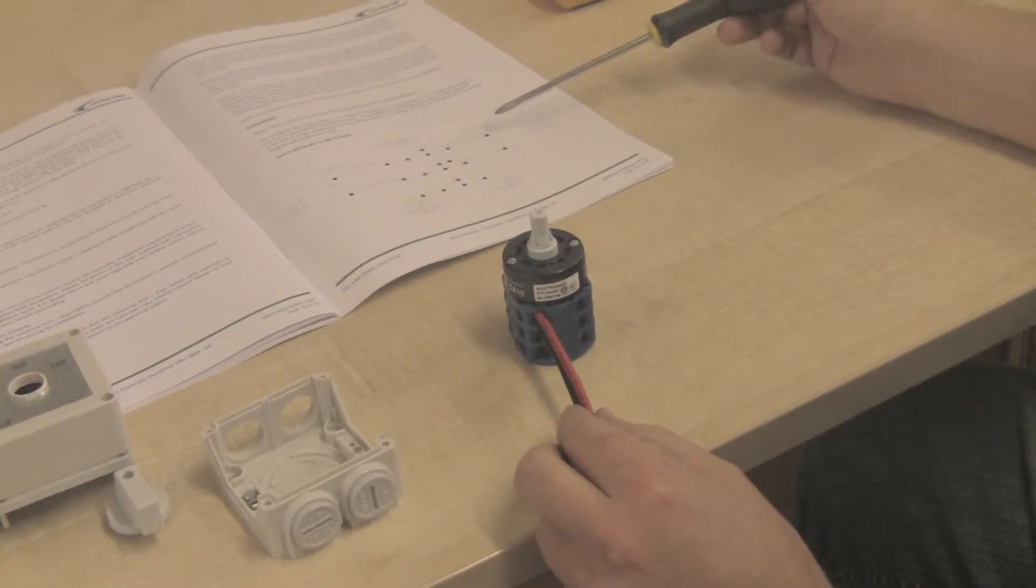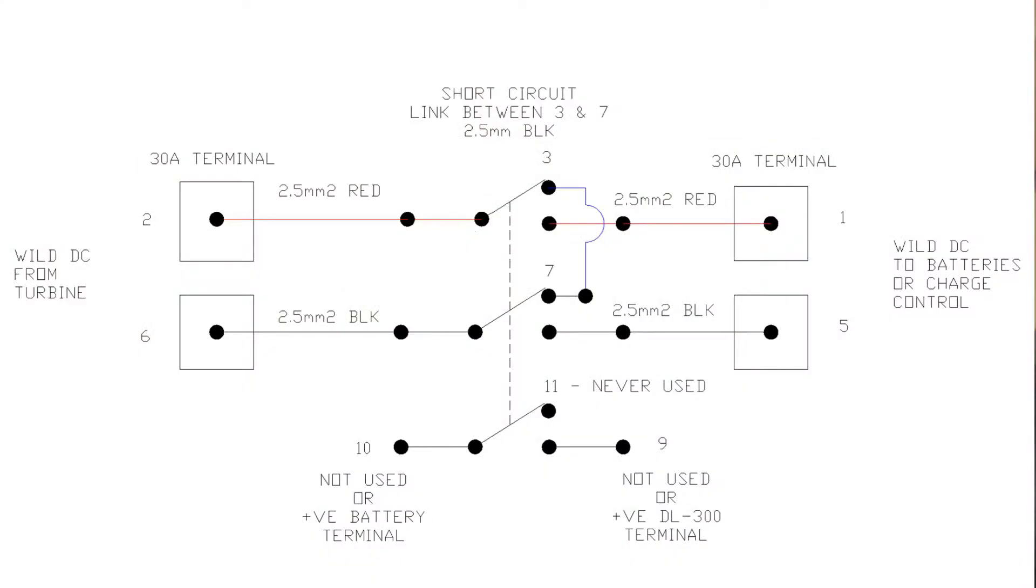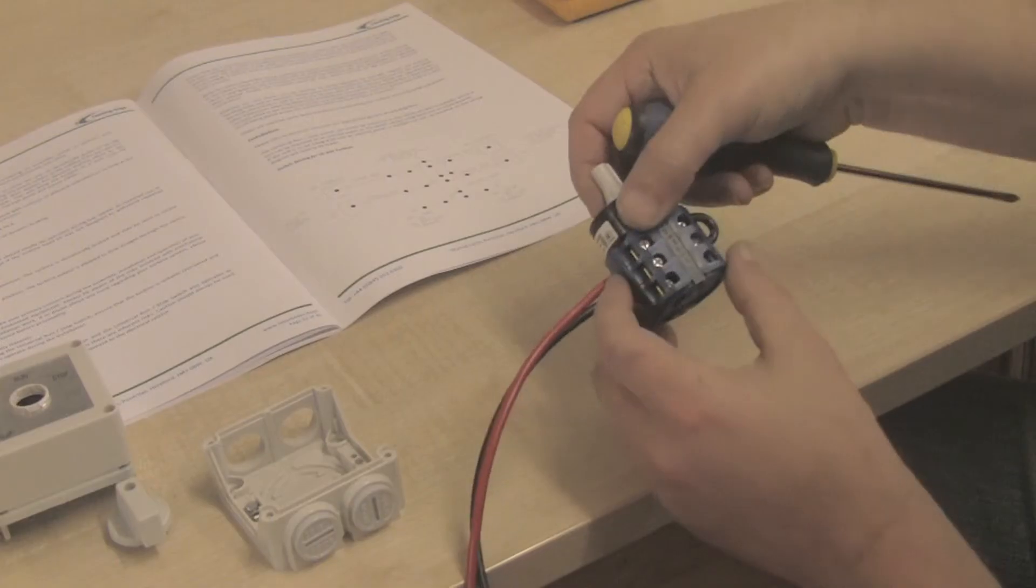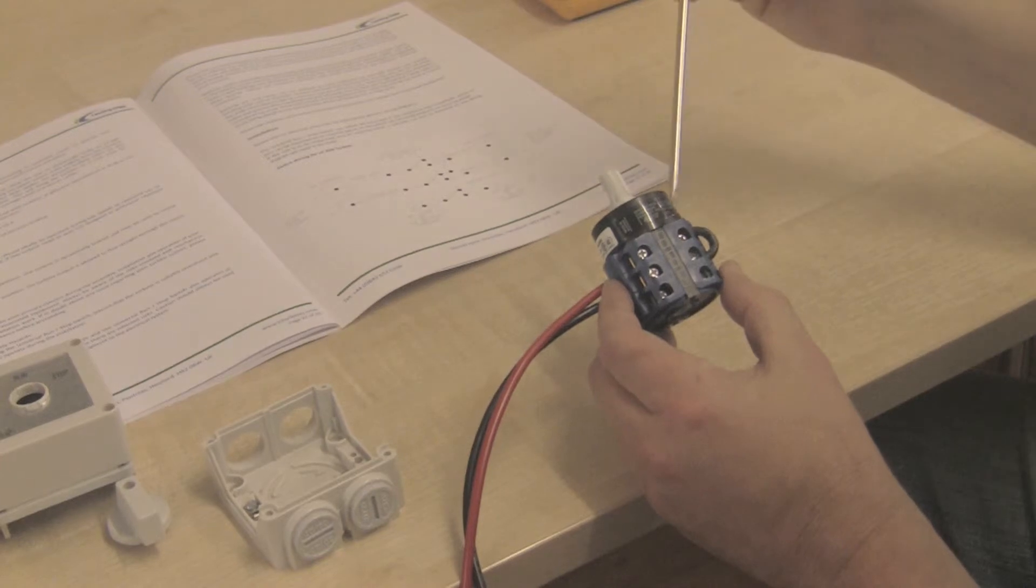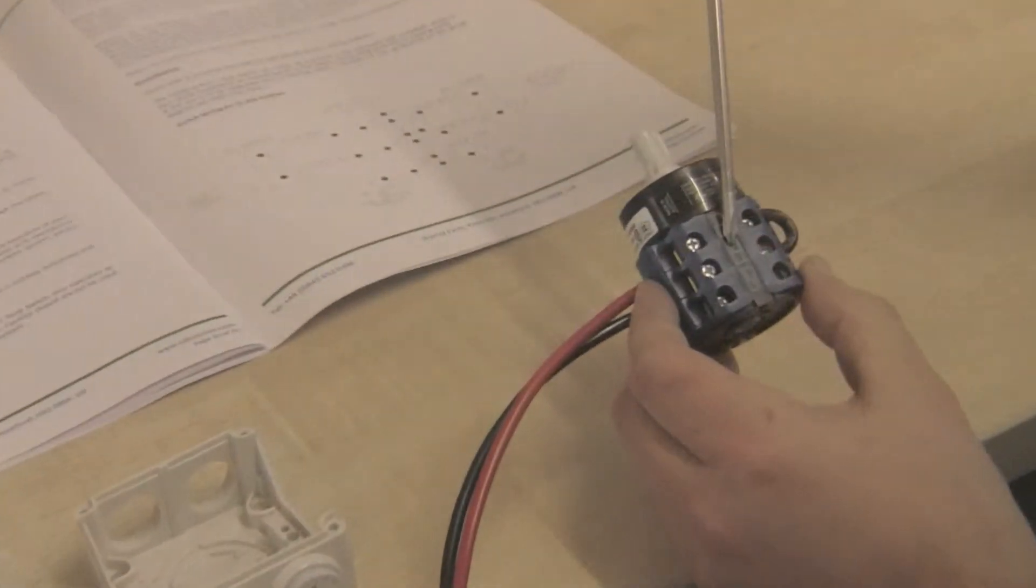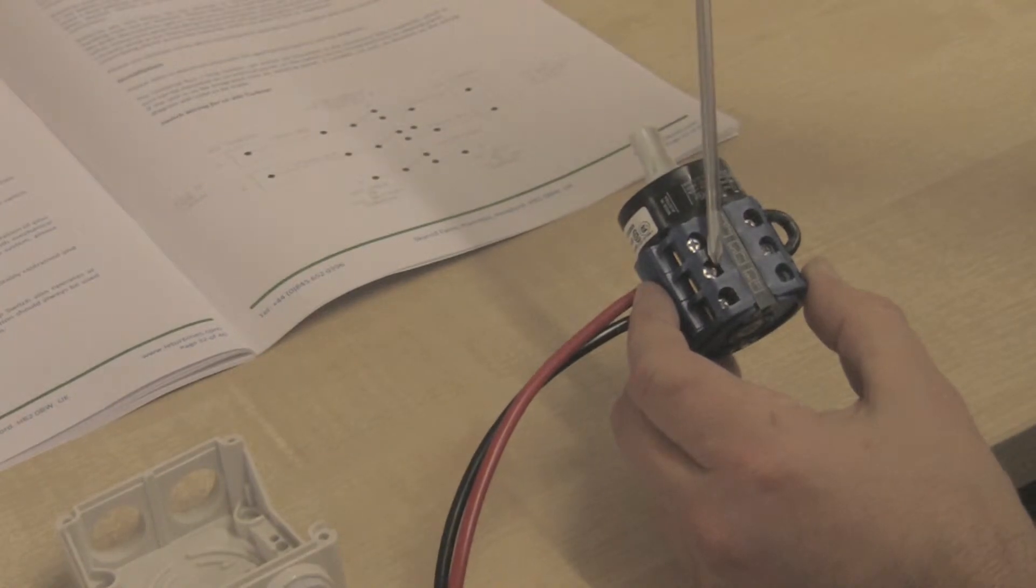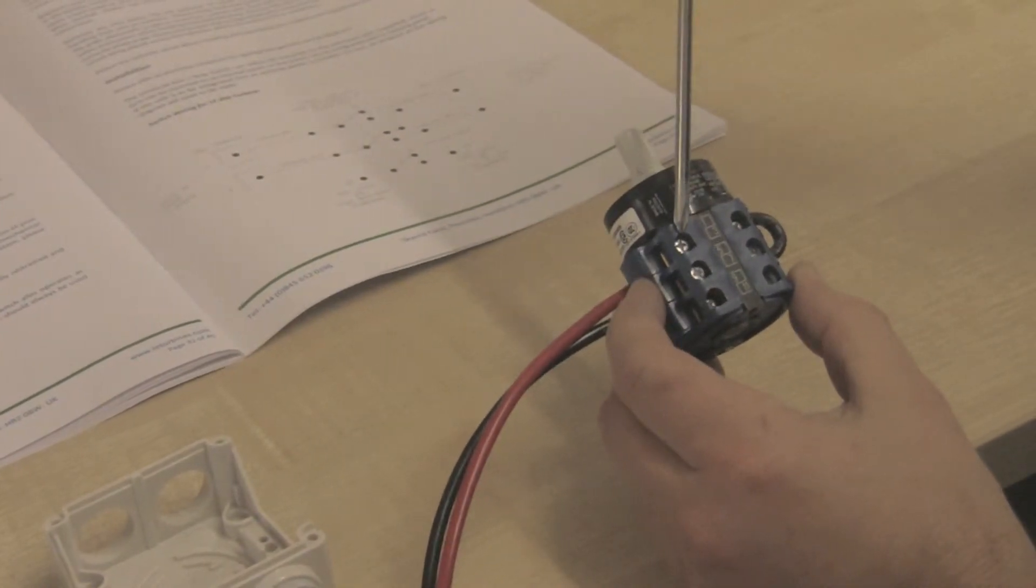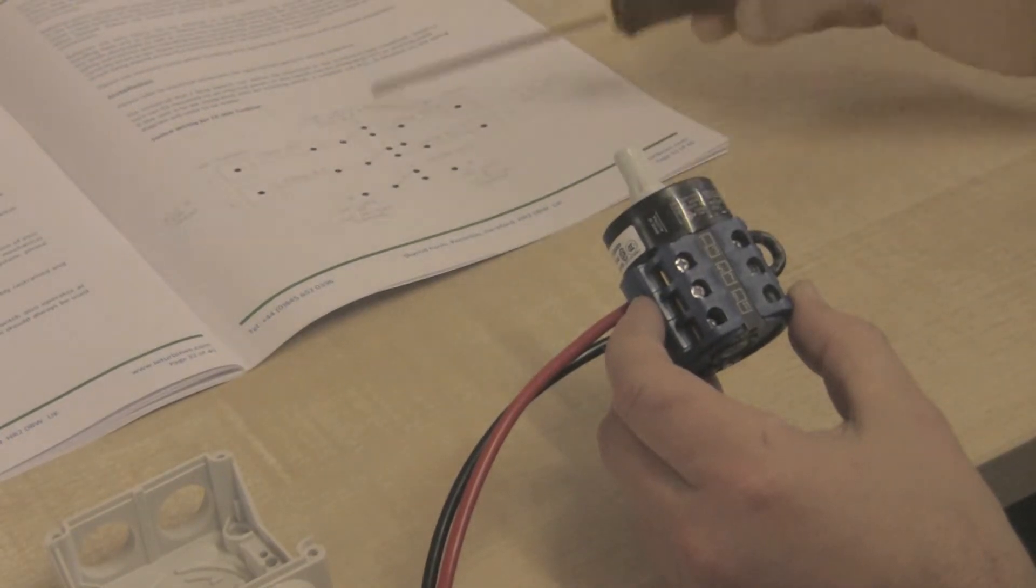On the right hand side here, we have the wild DC going to the batteries. So we need the positive battery terminal connected to pin 1, and the negative battery terminal connected to pin 5. So if we have a look on the switch, you can see we've got pin 1 on the left hand side, pin 5 on the left hand side below pin 1. So we need positive to pin 1, and negative to pin 5.